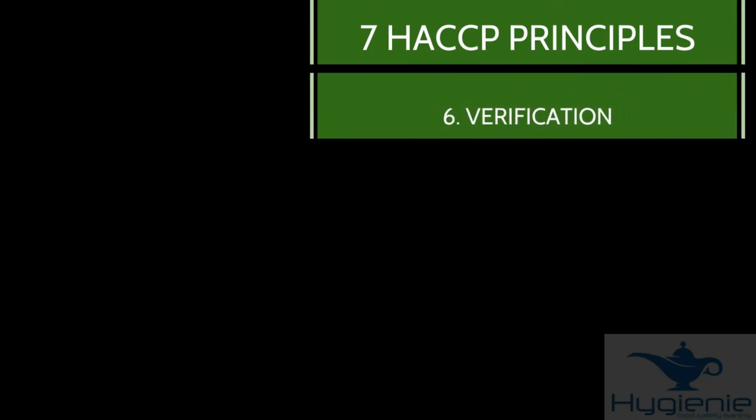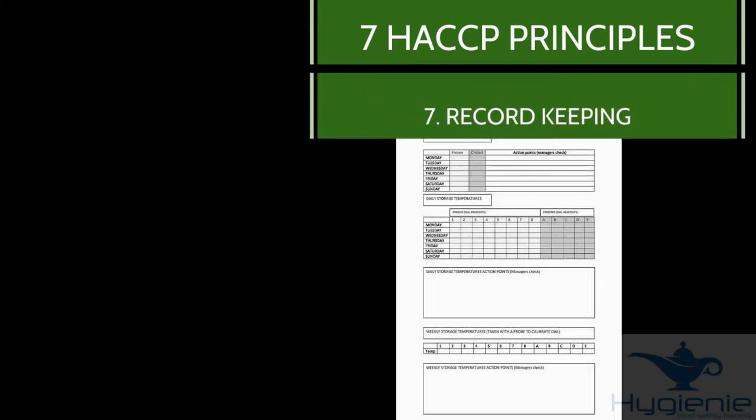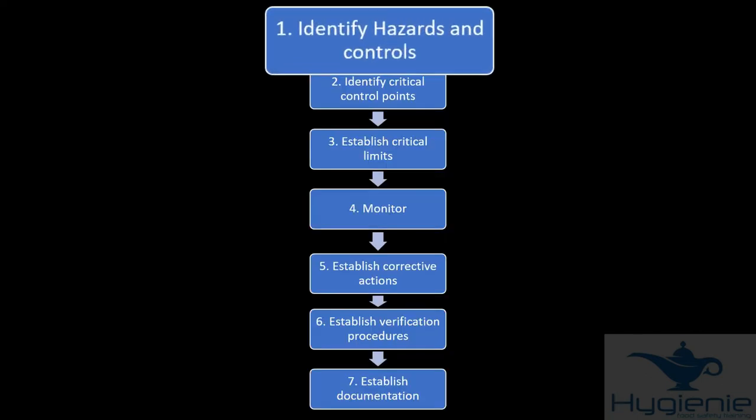Number six, verification. How do you know the system is working? Well if no one's getting food poisoning it's a good indicator the system's working. And the last principle, record keeping, writing down temperatures etc. Let's look in more detail at principle one. Identify hazards and controls.